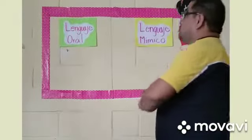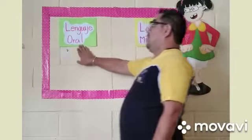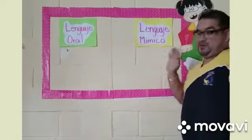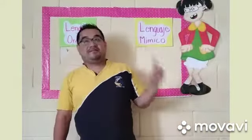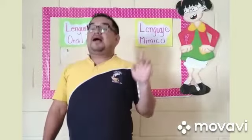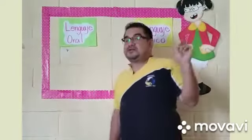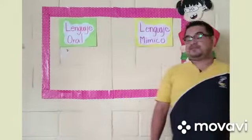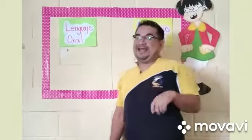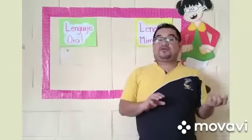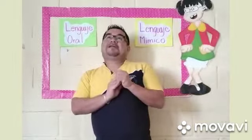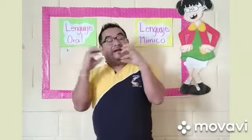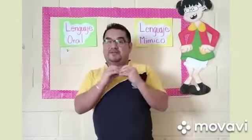El día de hoy vamos a hablar sobre el lenguaje oral y el lenguaje mínimo. ¿Se recuerdan que en la clase anterior vimos los elementos de la comunicación? Hablábamos que los elementos de la comunicación son emisor, receptor, código, mensaje y canal. Sabemos nosotros que para que exista una buena comunicación entre dos o más personas, tienen que manejar bien cada uno de estos elementos.